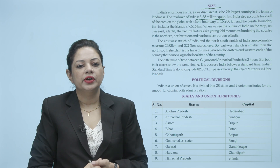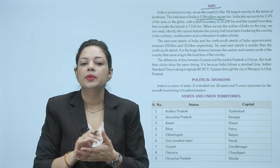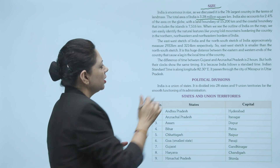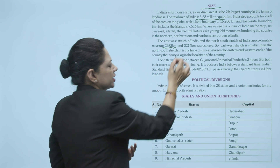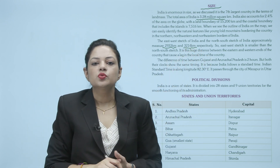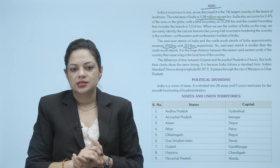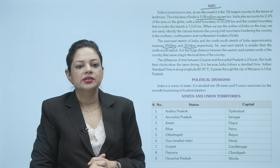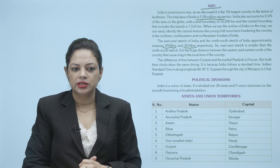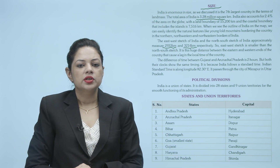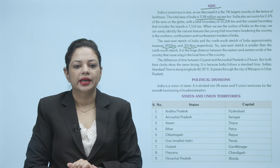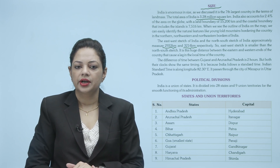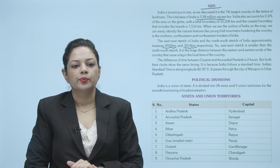The east-west stretch of India and the north-south stretch approximately measure 2,933 km and 3,214 km respectively. North se south 2,933 km aur west to east 3,214 km hai. So east-west stretch is smaller than the north-south stretch. It is the huge distance between the eastern and western ends of the country that causes a lag in the local time. The difference of time between Gujarat and Arunachal Pradesh is 2 hours, but both their clocks show the same timing because India follows a standard time. India's standard time is along longitude 82 degree 30 east, and it passes through the city of Mirzapur in Uttar Pradesh.